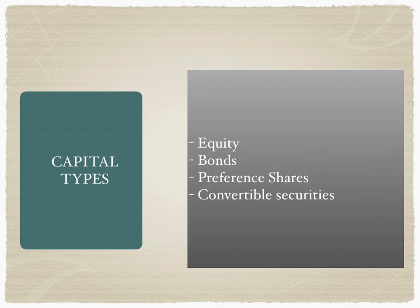From a corporate's perspective there are four capital types. The first one is equity, which includes common stock, differential voting rights (DVRs), as well as ADRs — that is American Depository Receipts.